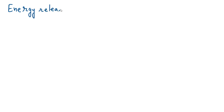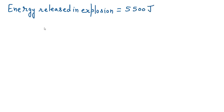In this question, the energy released in the explosion equals 5500 joules. To calculate the energy of particles A and B, we use the law of conservation of momentum, which states that the initial momentum of the system equals the final momentum of the system, written as p_i equals p_f.